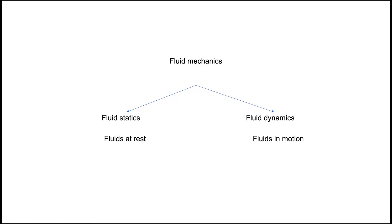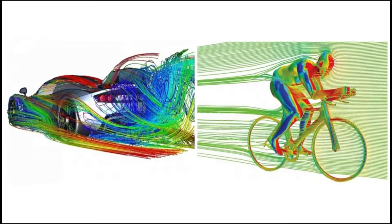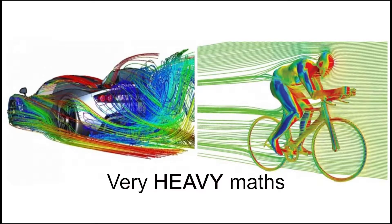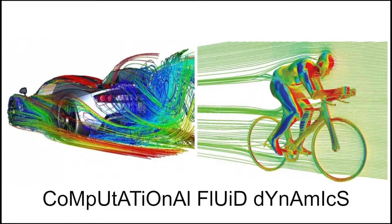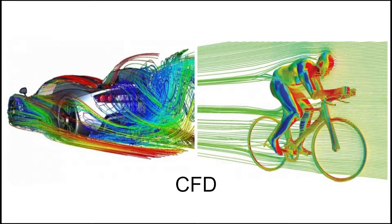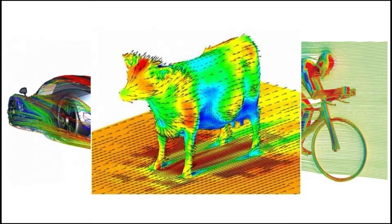Fluid statics covers fluids at rest — not moving — and fluid dynamics is the study of the effect of forces on fluid motion, so moving fluid. Fluid mechanics, especially fluid dynamics, is an active field of research that is typically mathematically complex — basically very heavy maths. Many problems are partly or wholly unsolved, which is why it's so hard. A modern discipline called computational fluid dynamics, also known as CFD, is devoted to this approach.